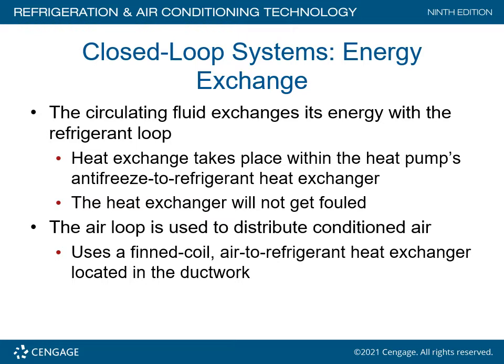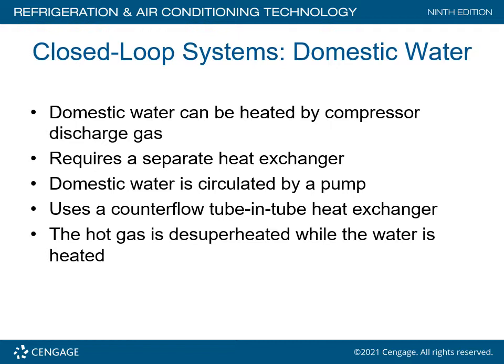In closed loop systems, energy exchange occurs when the circulating fluid exchanges energy with the refrigerant loop through an antifreeze-to-refrigerant heat exchanger inside the heat pump. The heat exchanger cannot get fouled because it uses treated water. The air loop distributes conditioned air using a fin coil air-to-refrigerant heat exchanger. Domestic water can also be heated by compressor discharge gas, requiring a separate heat exchanger with a circulating pump, utilizing a counterflow tube-within-a-tube heat exchanger. The fluids flow in opposite directions for maximum heat transfer, and the hot gas is de-superheated while the water is heated.